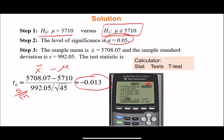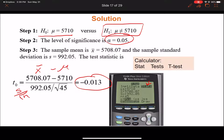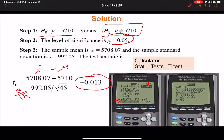I'm going to show you how to do this on the calculator. Hit STAT, TESTS, then T-Test - it's your second option. I'm using Stats because I have mu, x-bar, the standard deviation, and the sample size. If I had the raw data in L1, I would use Data instead. I'm selecting 'does not equal mu' because this is a two-tailed test. This is set up exactly the same as the PropZTest, just with T-Test instead. When I hit enter, I get my t-value: negative 0.013.